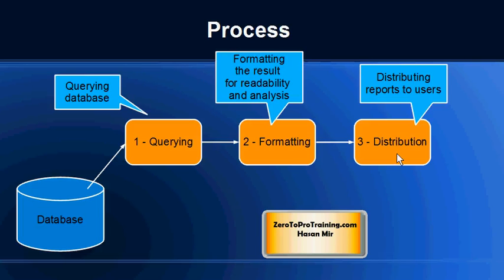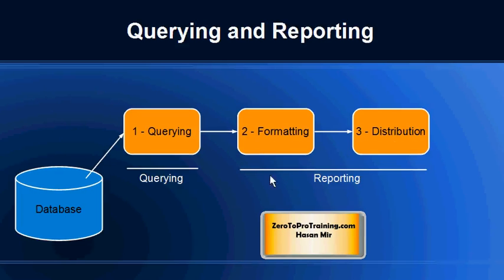Once the final result is ready it needs to be distributed to the users — that is step three, distribution. Strictly speaking, steps two and three come under reporting. Sometimes the term reporting is used for both steps, sometimes only for formatting, and sometimes only for distribution. But for all practical purposes both steps come under reporting, while querying is referred to separately. Querying and reporting are usually covered under a component that is part of a business intelligence suite.